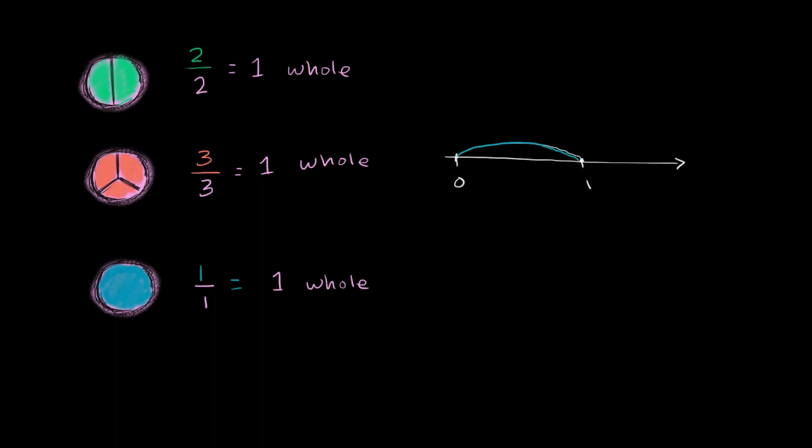If I divide it into two equal chunks, if I divide it into two equal chunks, and if I make two jumps, one, two jumps, I still end up at 1.